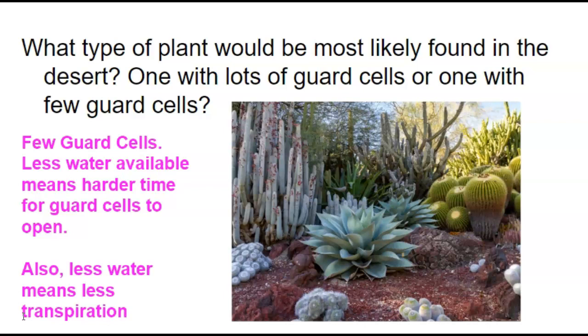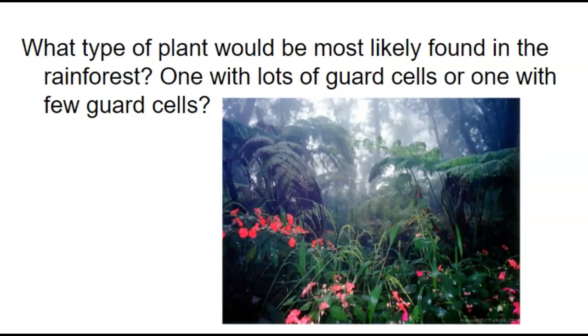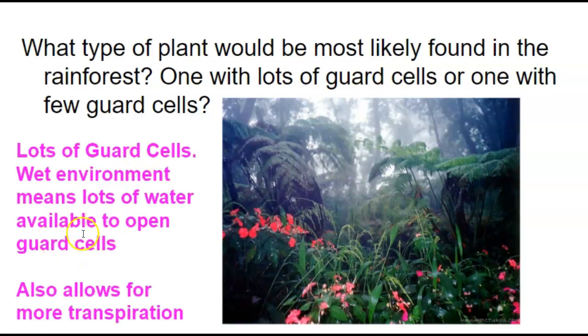Because if you're a plant in the desert, you don't want to allow a ton of water to leave because there's not a lot of water in the soil to pull up. If we take a look at the rainforest, then what if we have lots of water? You think we would have lots of guard cells or few guard cells? Well, if there's lots of water, we have lots of water to open those guard cells. Also means we can do transpiration. It's okay if we let some water evaporate, transpire, transpiration, out of our leaf because we have a ton of water around that we can just use to suck up and replace that from the soil.